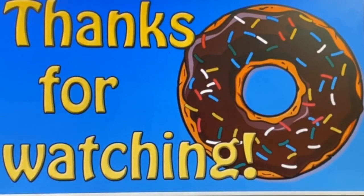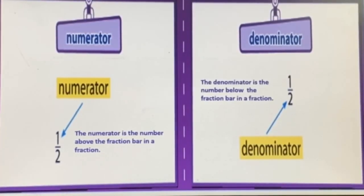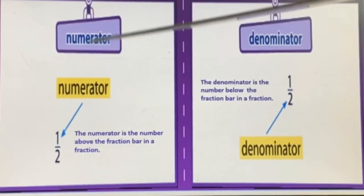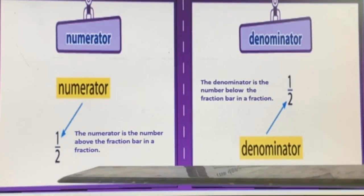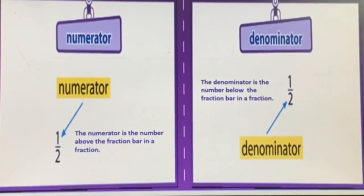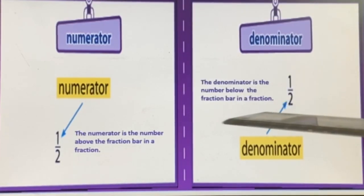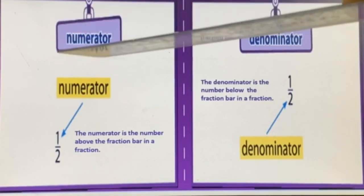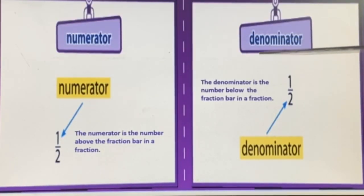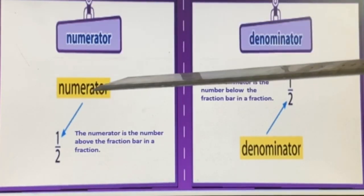Now let's review the vocabulary cards for this lesson. The first word is numerator. The numerator is the number above the fraction bar in a fraction. The next word is denominator. The denominator is the number below the fraction bar in a fraction. In one half, two is the denominator. So where do we write the numerator? Above the fraction bar, and the denominator goes below the fraction bar.